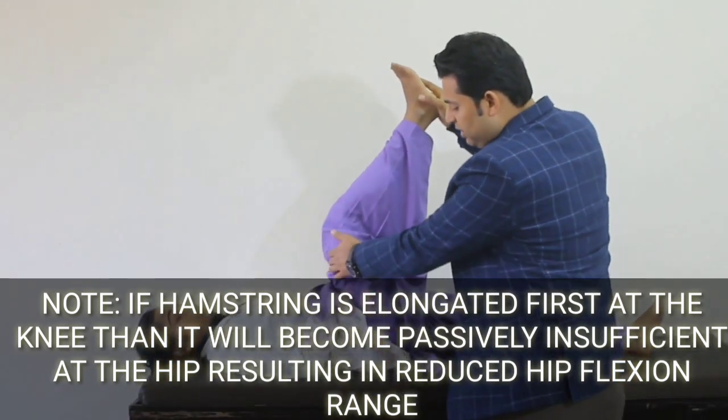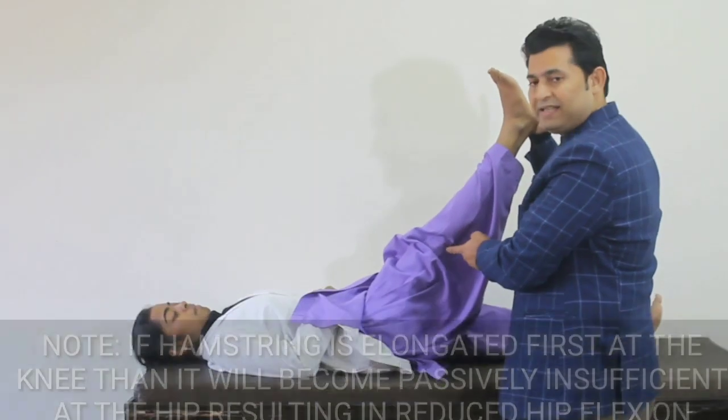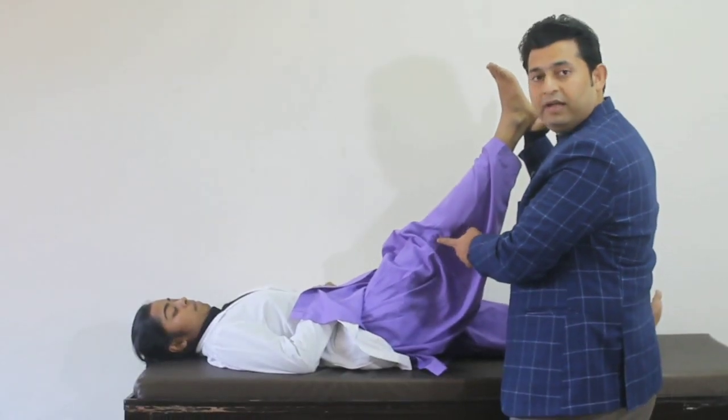To make the hamstring passively sufficient, we reduce the hip flexion. With less hip flexion, the hamstring can now maximally elongate at the knee joint. To demonstrate passive insufficiency in any two-joint muscle, we take the muscle at one joint into the maximum elongated position and then demonstrate its inability to elongate maximally at the other joint.